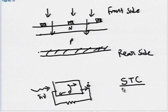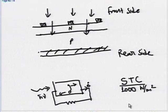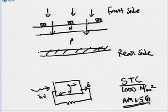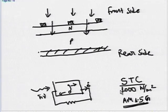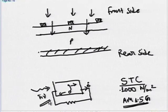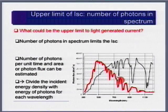Under standard test conditions, the power density is 1000 W/m² of air mass 1.5 G spectrum. In this spectrum, the photon flux — number of photons per unit area per unit time — determines the upper limit of short circuit current. If every photon gives one electron, knowing the photon flux tells us the upper limit of current. That is why knowing the photon flux is important.